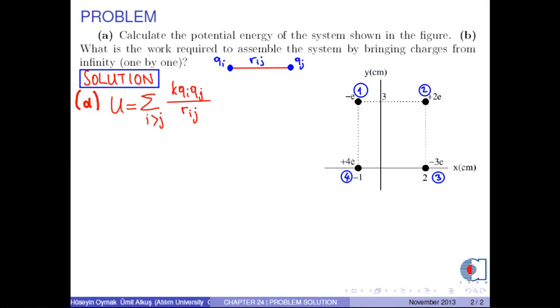then q1 is negative e, q2 is positive 2e, q3 is negative 3e, and q4 is positive 4e.